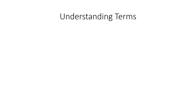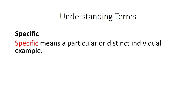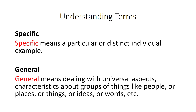Now we need to know a couple of terms before we learn the different types of arguments. Those terms are specific and general. Specific means a particular or distinct individual example. And general means dealing with universal aspects or characteristics about groups of things like people, places, things, ideas, or whatever other types of groups.